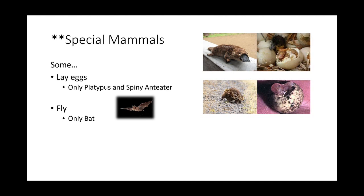There are no mammals that fly except for the bat. The bat is the only mammal that can fly. The reason a bat is still a mammal is because it has an outer covering of hair and feeds its young with milk, so it is still classified under mammals.